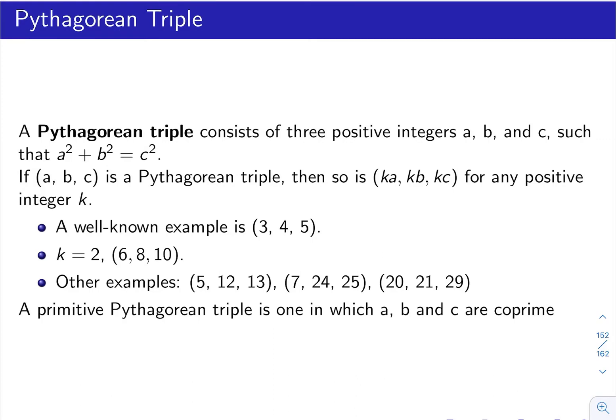Today we're going to talk about Pythagorean triples. We all know the Pythagorean theorem in geometry: when a triangle is right-angled with sides a, b, and c, where c is the hypotenuse, then a squared plus b squared equals c squared.